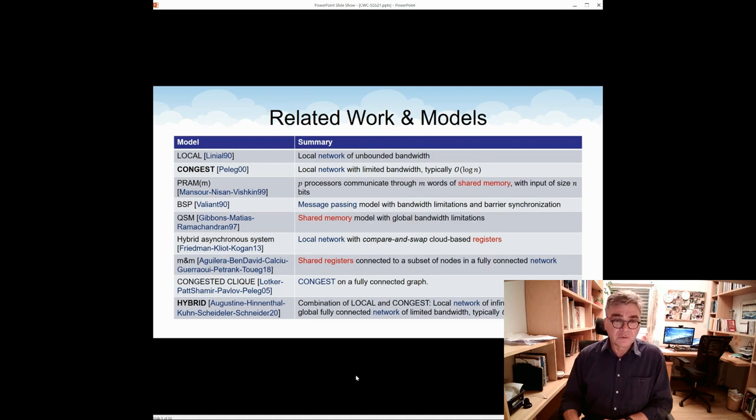This is not the first model in distributed computing, obviously, as we list quite a few here in this slide. Some models here combine message passing with shared memory. For our case, the most relevant ones are the congest model, which was introduced in the 90s. This is a message passing model with bounded bandwidth links. And much more recently, less than two years ago, the hybrid model was proposed. The hybrid model has a network with unbounded bandwidth, and also there's a clique connecting all nodes among themselves. But the use of the clique links is limited.